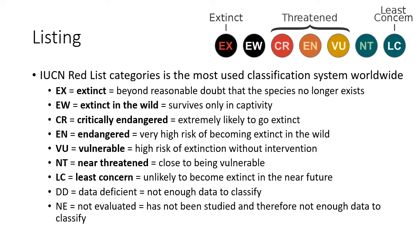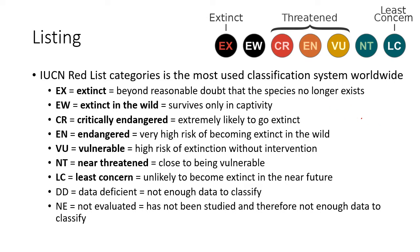Extinct means beyond any reasonable doubt that the species no longer exists — no living members on the planet. A species can be extinct in the wild, meaning it survives only in captivity. Extinct and extinct in the wild are different. There is also a term called functionally extinct, which means that once those individuals die, the species will be extinct. For example, if there are only two males of a species left, they are functionally extinct because they can't repopulate. You don't need to know that term for the IUCN Red List — it's just an aside.